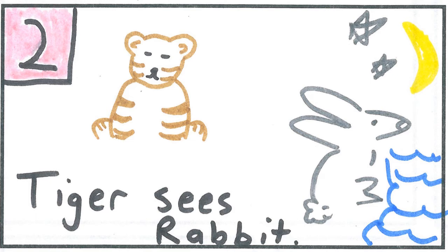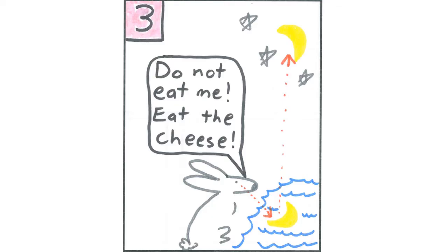In block number two, I decided to show the tiger seeing the rabbit. I drew a rabbit, a tiger, the moon, the stars, and some water. I also wrote, Tiger sees rabbit. In block number three, I chose to show the rabbit seeing the reflection of the moon. Rabbit says, Do not eat me. Eat the cheese.